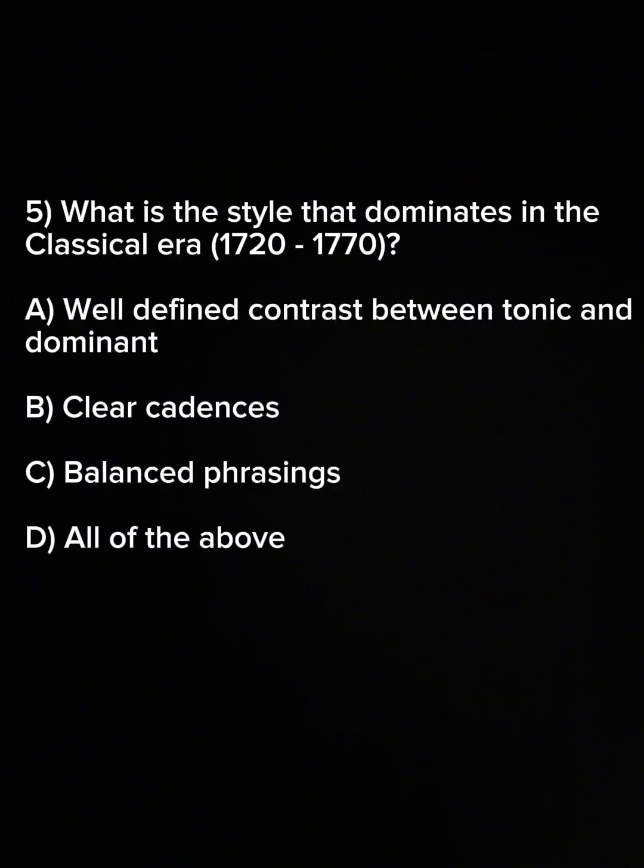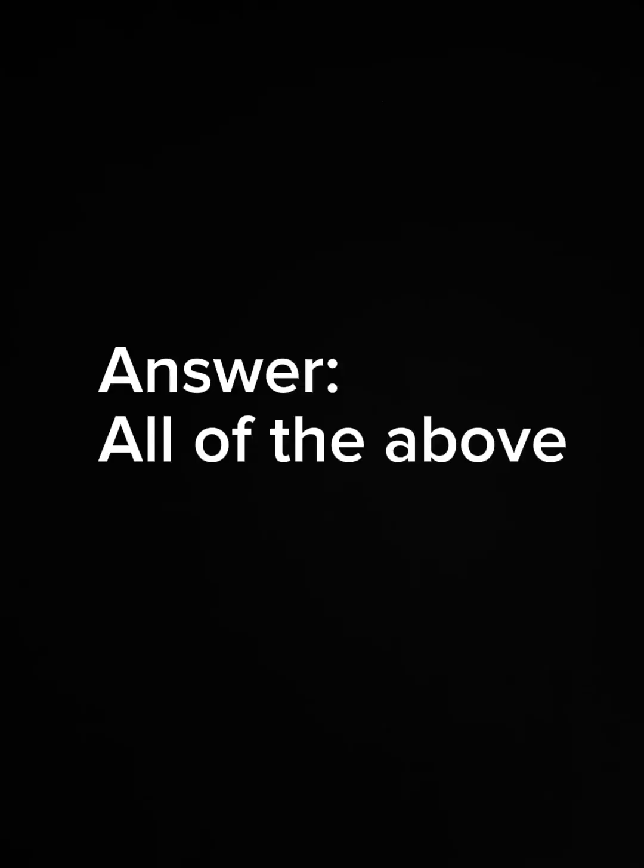Question 5. What is the style that dominates in the classical era 1720–1770? A. A well-defined contrast between tonic and dominant. B. Clear cadences. C. Balanced phrasings. D. All of the above. Answer: All of the above.